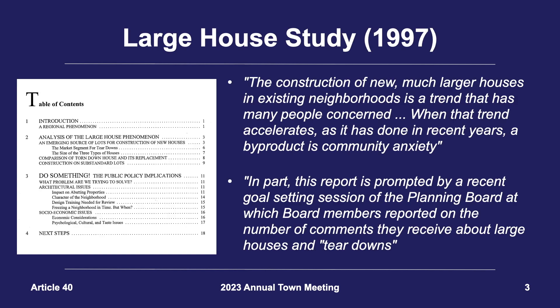In the early 1990s, the Lexington Planning Department started to notice a growing trend in the construction of new homes that were much larger than those in existing neighborhoods. In 1997, in response to a large amount of comments from the public expressing concern and anxiety regarding this growing trend, the Planning Board wrote a report called the Large House Study, in which they characterized the trend to date and suggested potential policy and mitigation options.